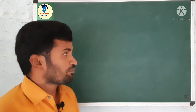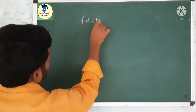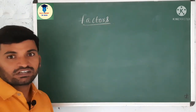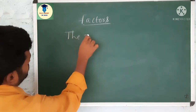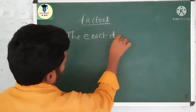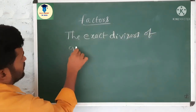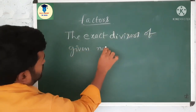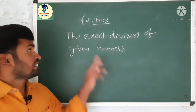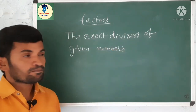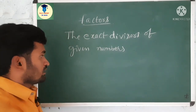In this chapter, the main concept is factors. So, let us know factors. What are the factors? Factors means the exact divisors of given numbers. This is the meaning of factors. The exact divisors of given numbers. Divisors means we may know long division or actual division.